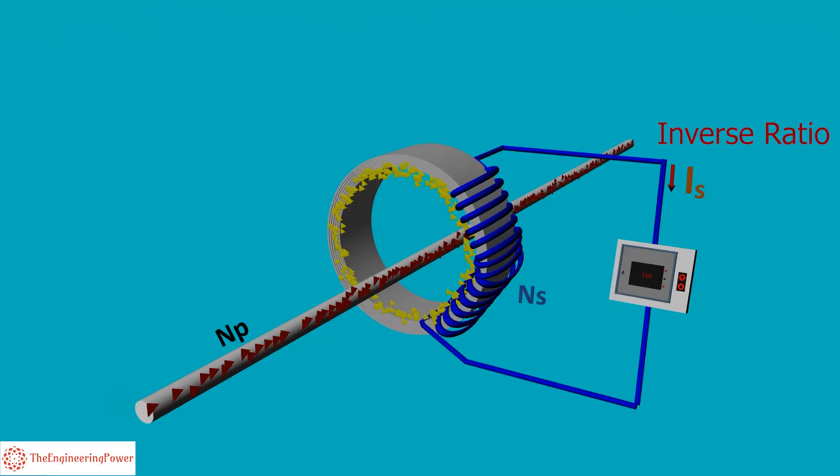In a CT, inverse ratio exists between the primary and secondary currents. That is, IS divided by IP is equal to NP by NS. In other words, we can say that the primary current will be equal to number of turns in the secondary winding divided by number of turns in the primary winding multiplied by secondary current.